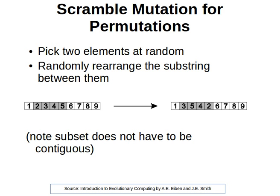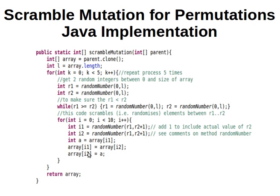The Java code is quite simple. We receive an integer array as input, then make a clone of it to keep the parent unchanged — though we don't have to do that. Then we repeat the randomization process five times.